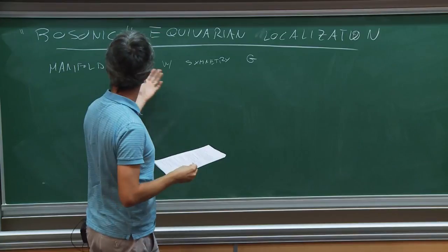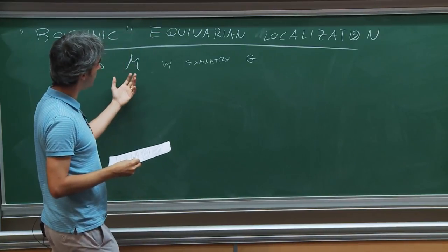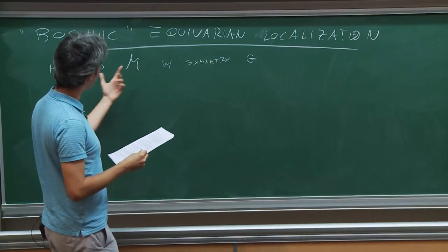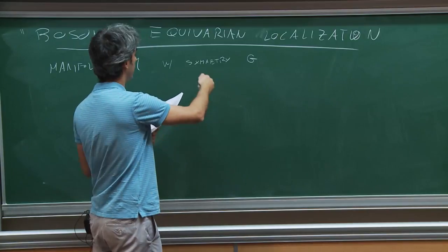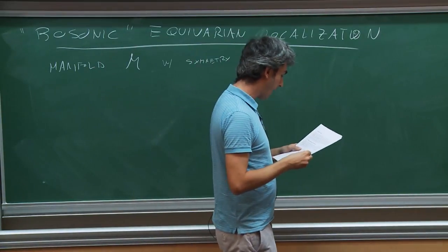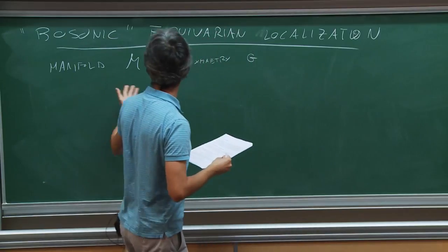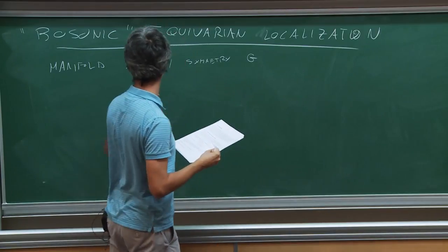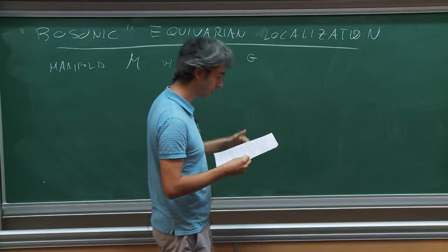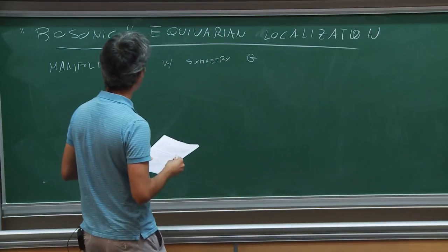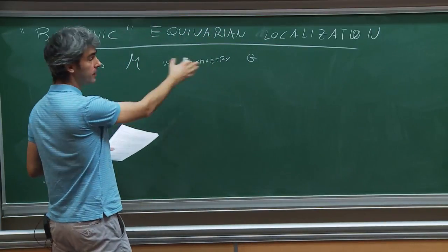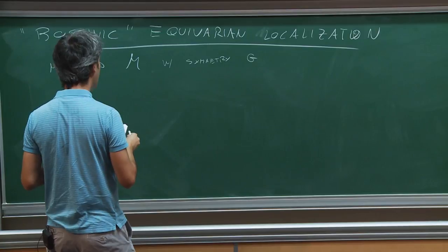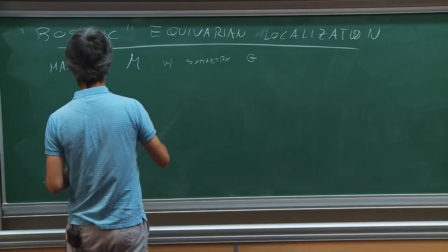If we are in this situation, a natural idea to perform this integral would be to first perform the integral on the orbits of G and then integrate over the orbits. It depends what type of function we are integrating, but in particular we could try to reduce the problem to M mod G by doing this integration in two steps. However, in general, M mod G is not a manifold — in particular, if G has fixed points, M mod G is not a smooth manifold.